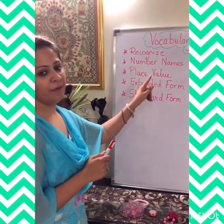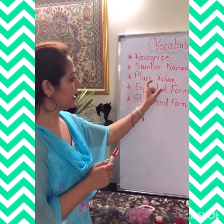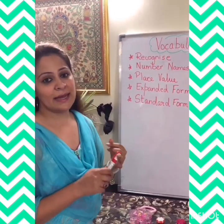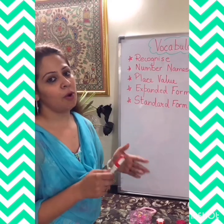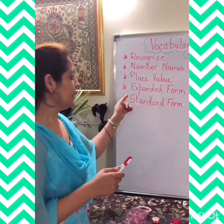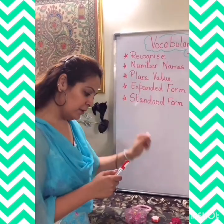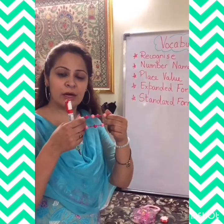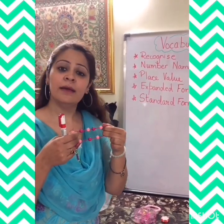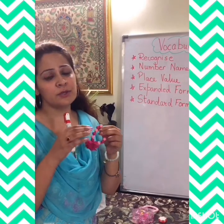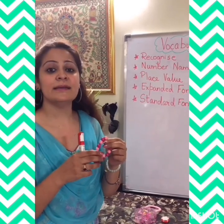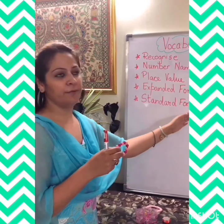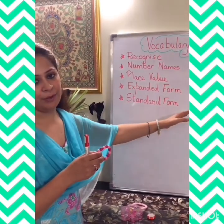'Place value' — when we write digits as per their place value, that is ones, tens, hundred, thousand, and on and on. Next is 'expanded form' — when we expand something, when we stretch a number, expand it, and then bring it back to its normal form — that is the 'standard form', a standard way of writing a number.